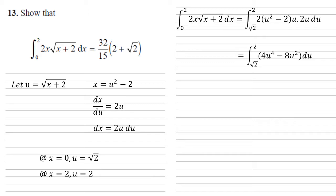So to integrate, we just raise the power by 1 and divide by the new power. So we have 4 fifths u to the power of 5 minus 8 thirds u cubed. And our bounds on the end are still root 2 and 2.